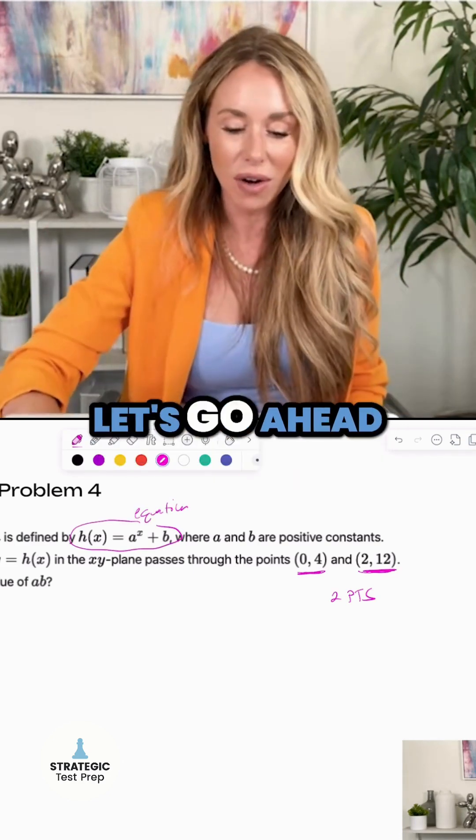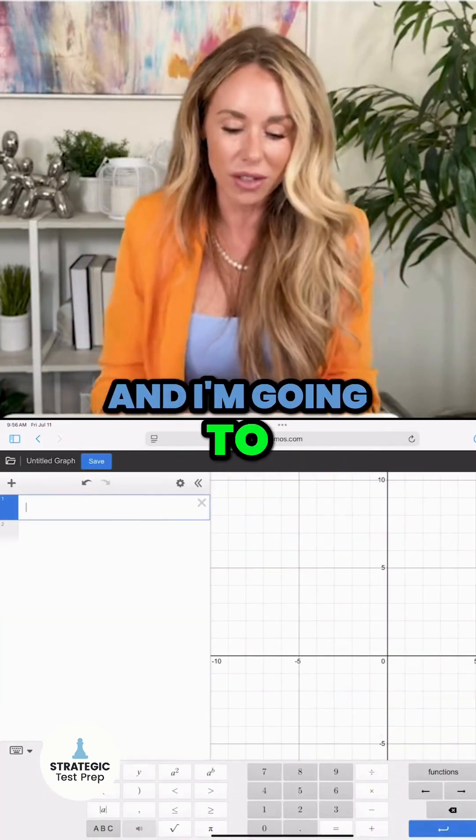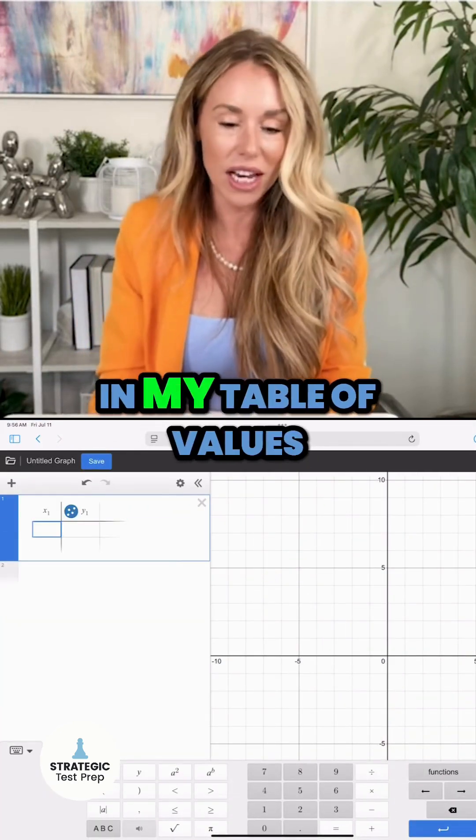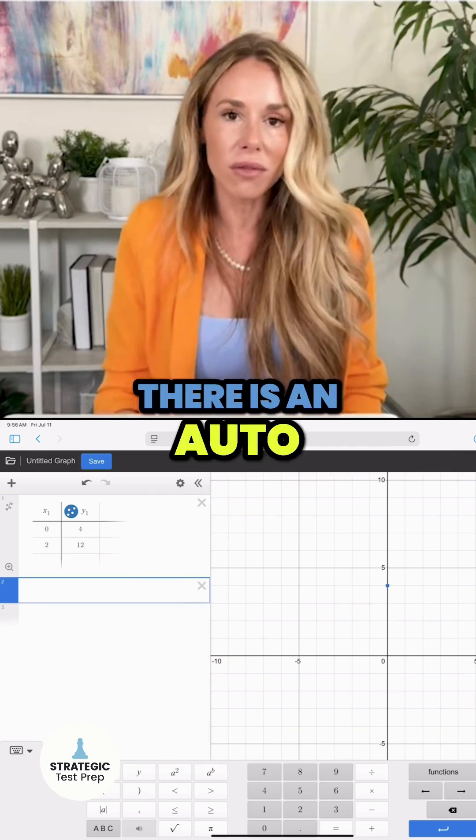Let's go ahead. We're going to go to Desmos and I'm going to type in table, and I'm going to go ahead and throw in my table of values. Now there is an auto regression for exponential, but as you can see it's a little different than what we need because it's multiplying the constant with the other part of it.